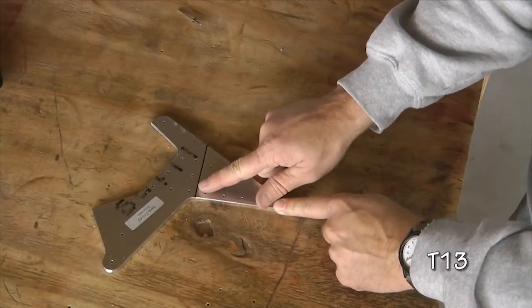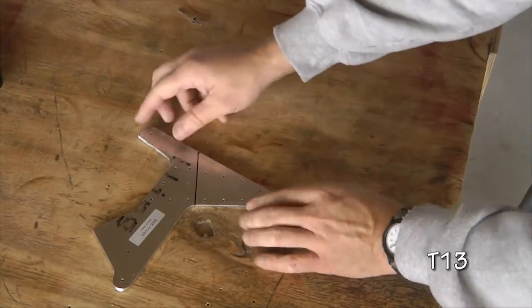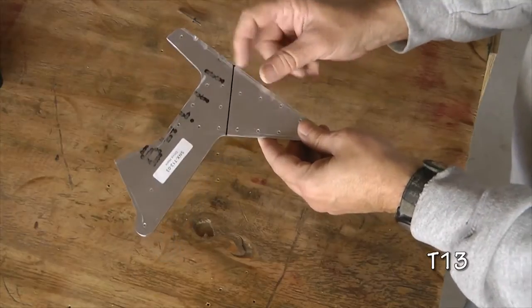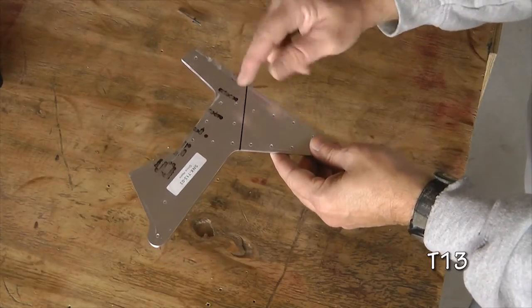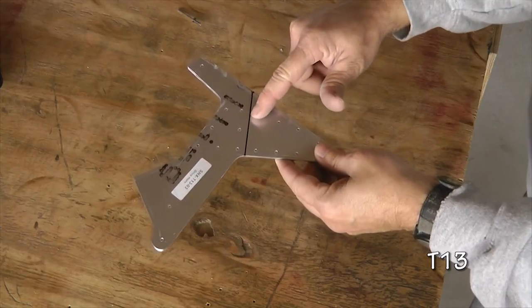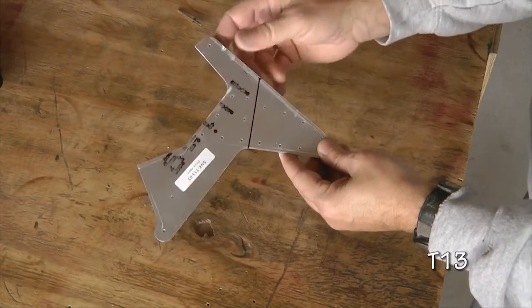But we want a half inch radius bend here. So I'm going to take this over to our press. Use a one inch cylinder to press down so that we don't get a sharp bend here. We get a half inch radius bend.